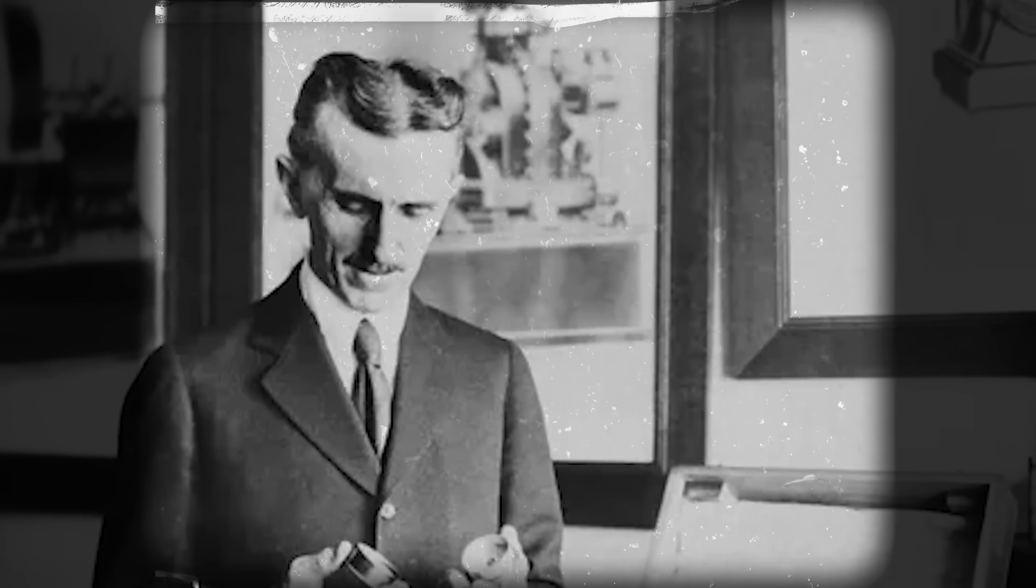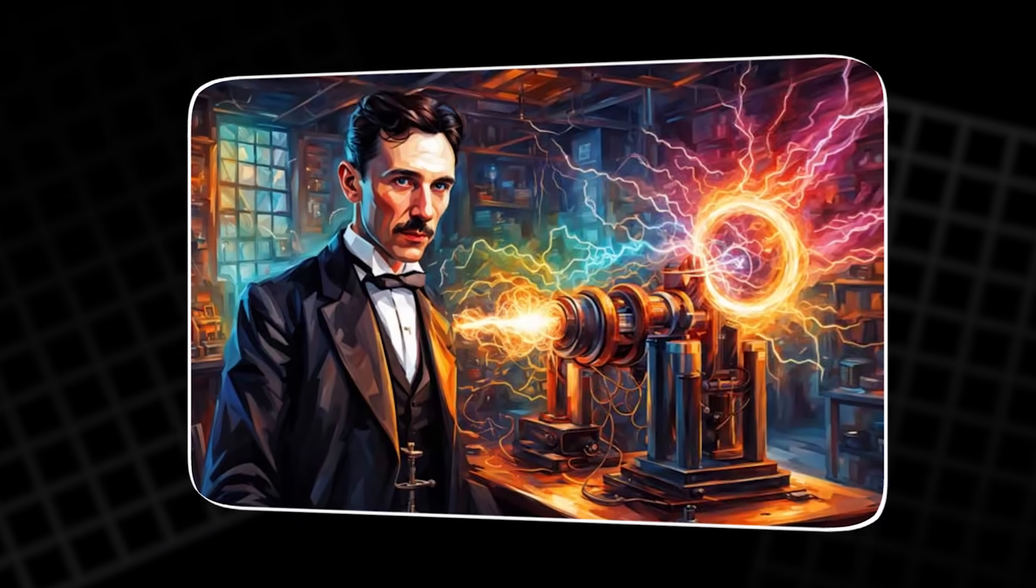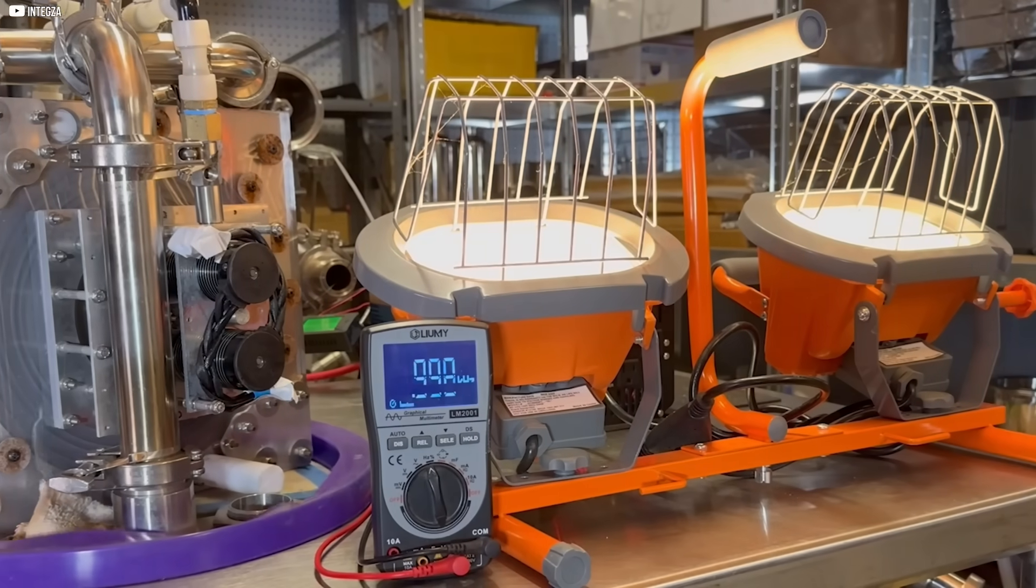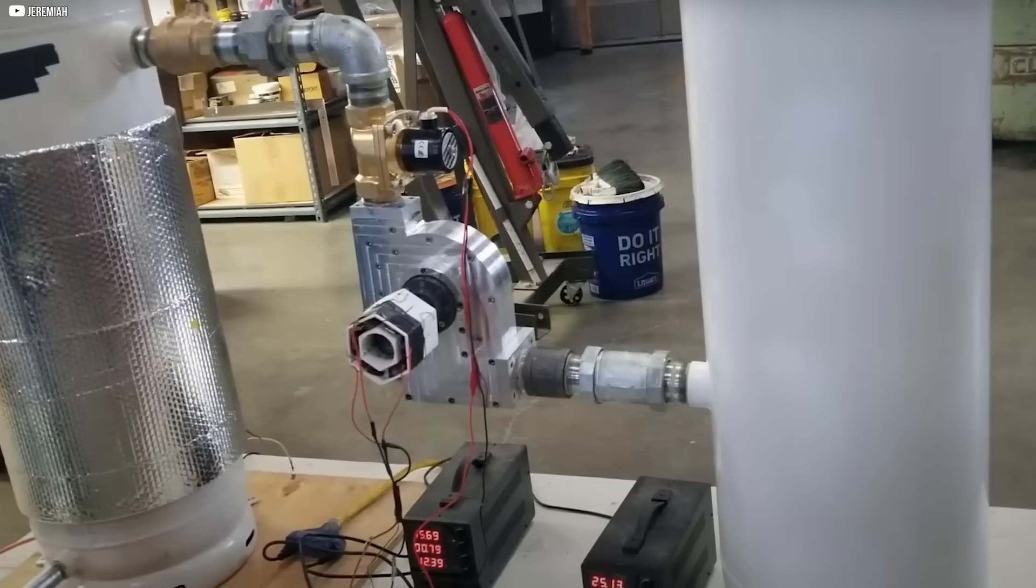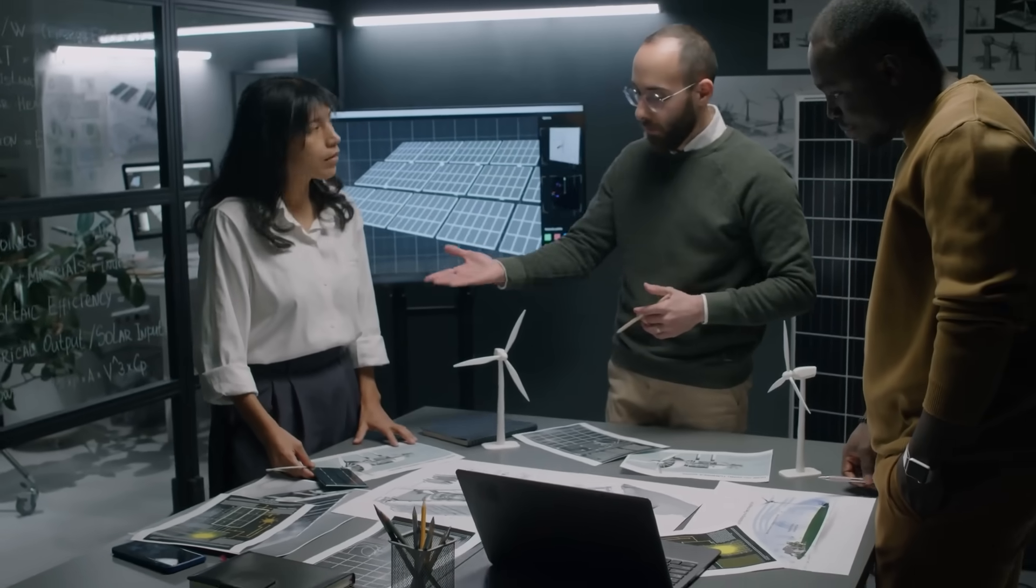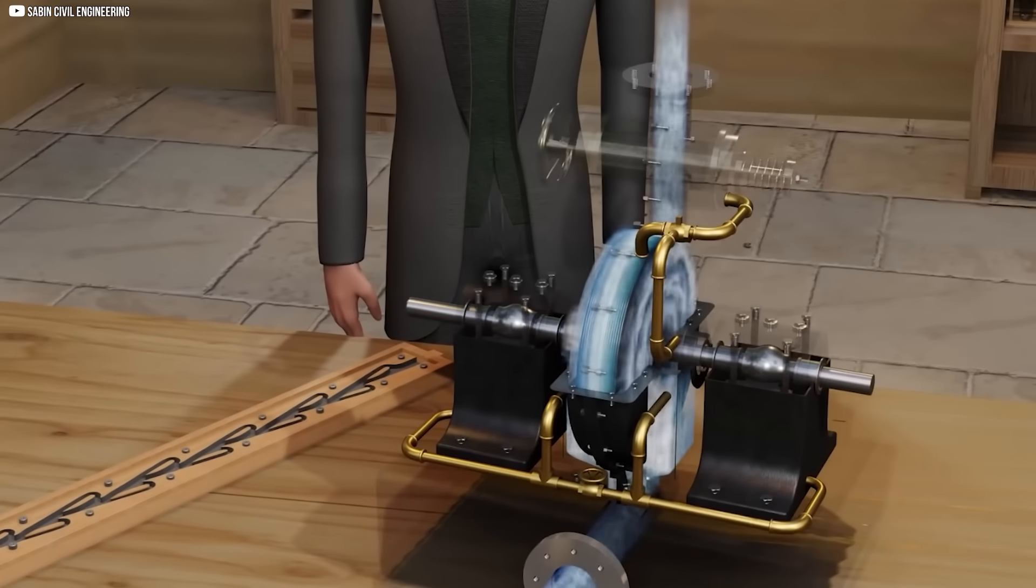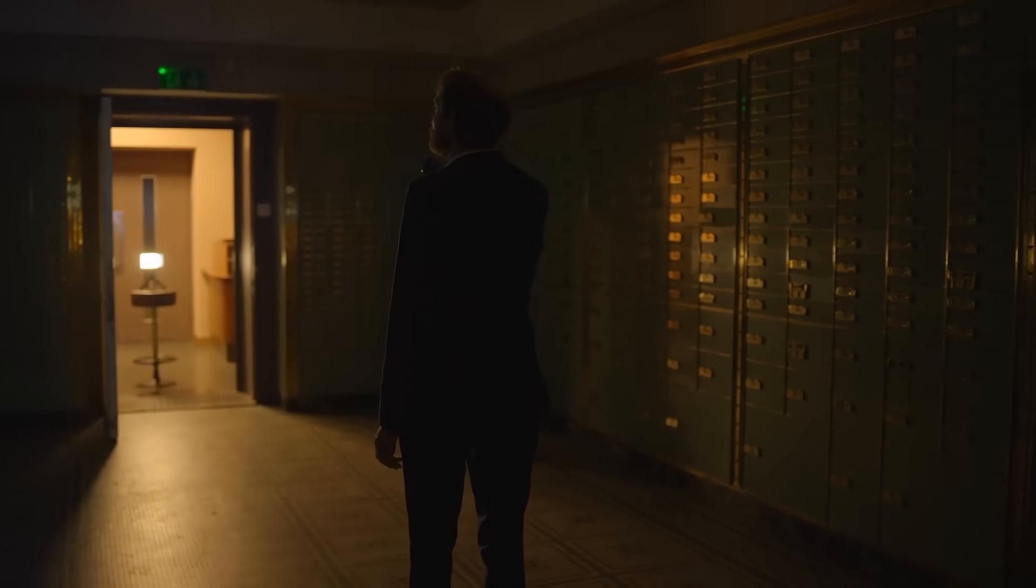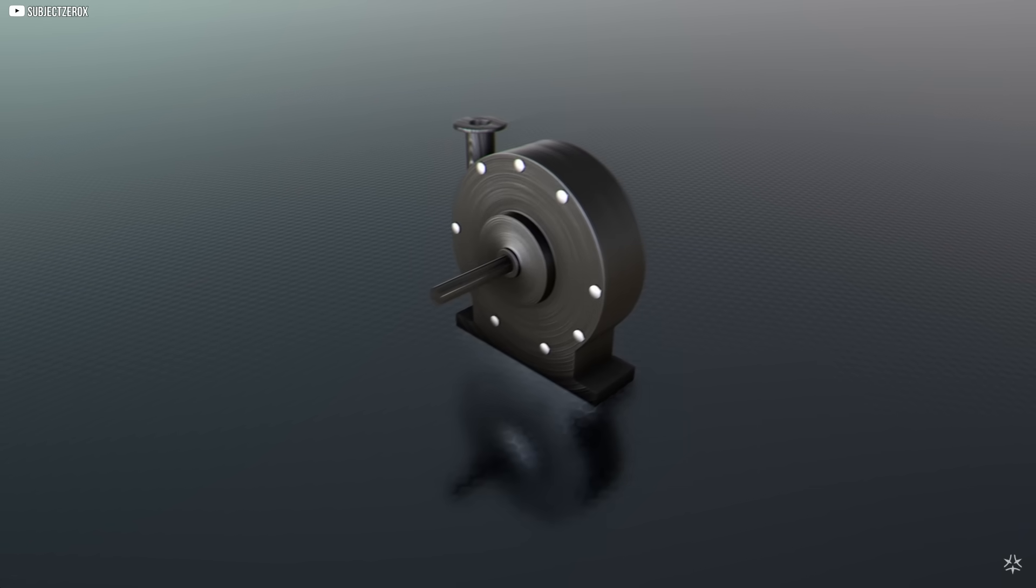Nikola Tesla dreamed of a world powered not by brute force, but by the elegance of nature's hidden mechanics. The bladeless turbine was one of his quietest ideas. And yet, it carried the boldest promise. Though it never conquered the energy world, it still hums in the background, waiting. Today's engineers stand where Tesla once stood, staring at a disk, imagining what's possible. And with every whisper of steam, every spiral of water, we hear echoes of a man who saw motion where others saw stillness. The Tesla turbine wasn't just an invention. It was a challenge, and maybe a prophecy.